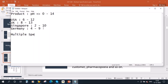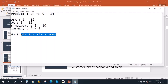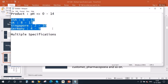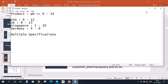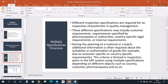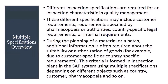With multiple specifications, we will have only one common MIC, and using this multiple specifications feature, we will be configuring these ranges. This is one example provided using country, but sometimes customers also may have different requirements. Different customers will have their own requirements, so during those scenarios we will be using the multiple specifications.